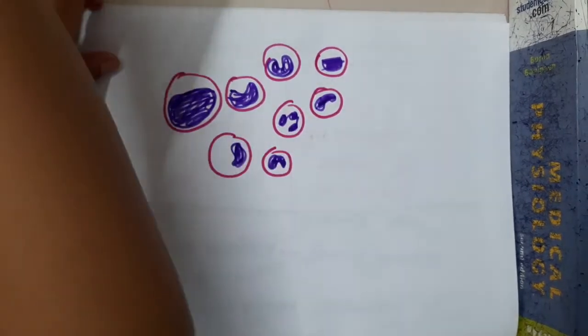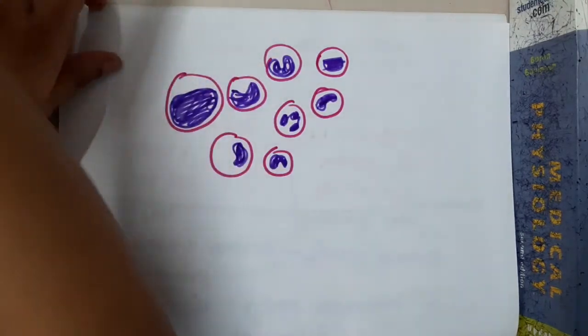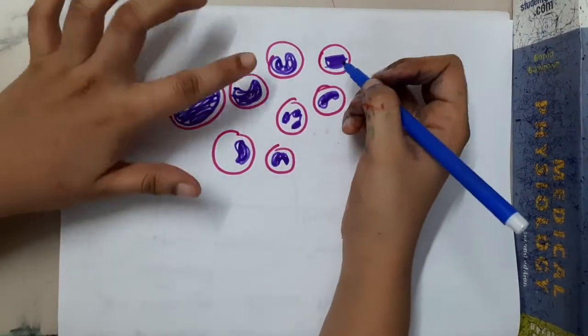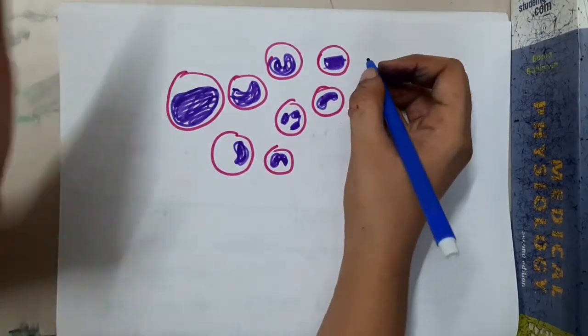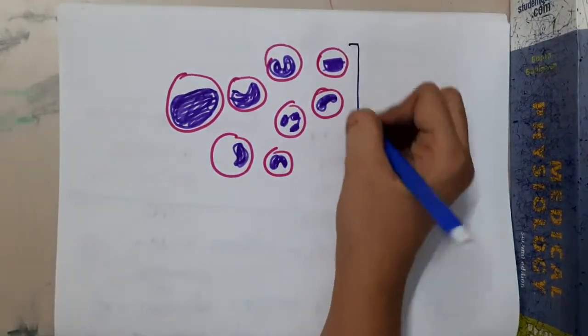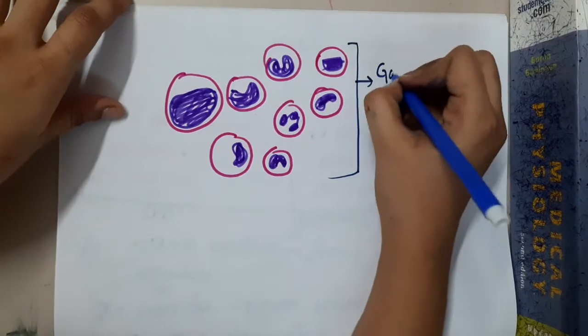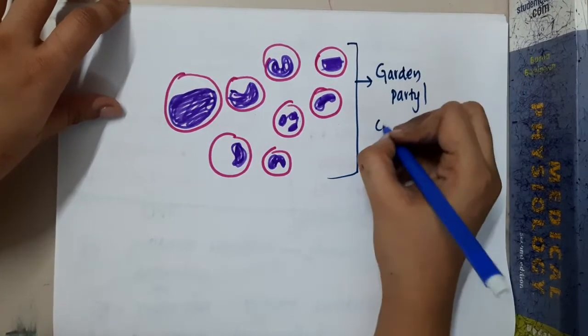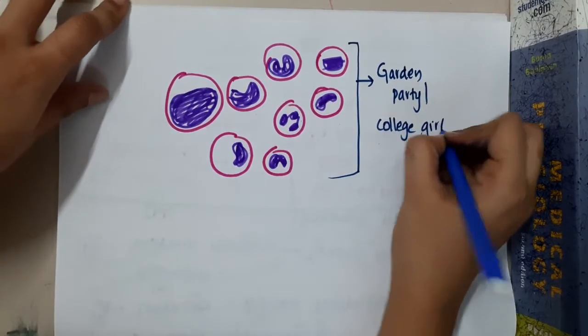Because lymphoblasts are present in different stages, you will see lymphoblasts of different ages are present in CML. This is called the garden party appearance or college girl appearance.